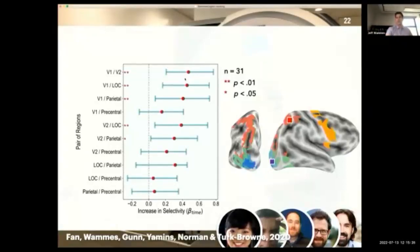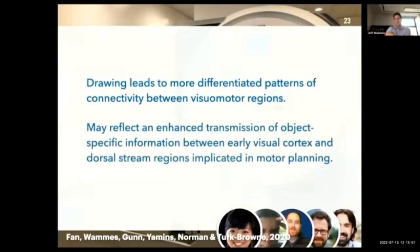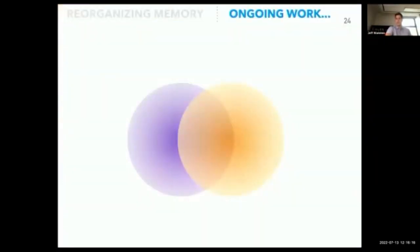And just to highlight our example here, what we find is that this increase in selectivity happens in V1 and parietal cortex, but also in several other pairs of regions. Most prominently, it's connectivity within early visual cortex, but we also get these kind of bridge ROI pairs that go between V1 and parietal cortex and V2 and parietal cortex. So this is some interesting evidence that we're getting more differentiated patterns of connectivity as a result of this training. And what we think this might reflect is that there's some enhanced transmission of object-specific information along the dorsal stream—so basically between these early visual regions and more motor planning regions.